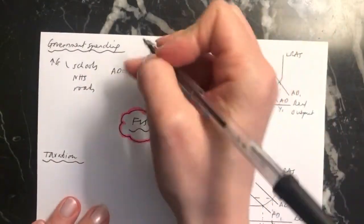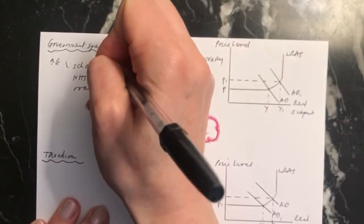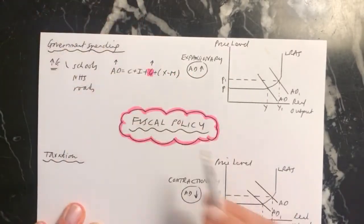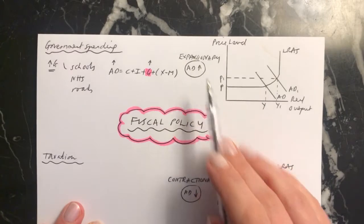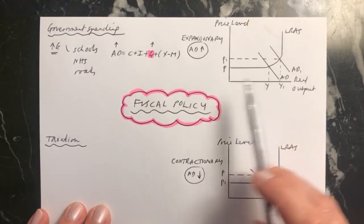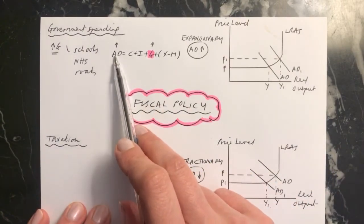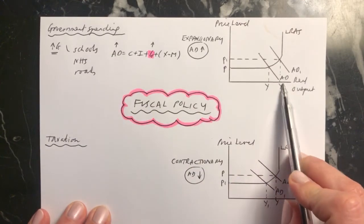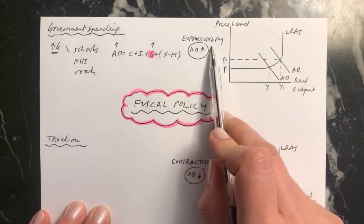and if they're increasing government spending, that's expansionary fiscal policy, which is shown here. And you can see that, as I say, ceteris paribus aggregate demand goes up. So AD shifts to the right here, and we find that output goes up, so the economy does expand.